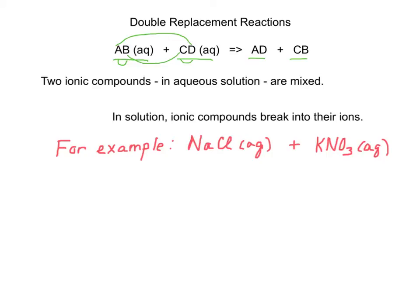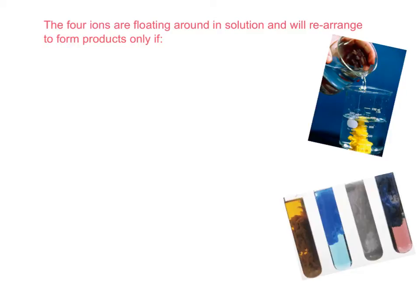When I put these things in solution in water, the ionic compounds break into their ions. For instance, if I take sodium chloride and potassium nitrate, what I have is sodium ion and chloride ion and potassium ion and nitrate ion. And what those ions are doing are floating around in solution. So these four ions float around in solution. And they'll only rearrange to form products if one of three things happens.